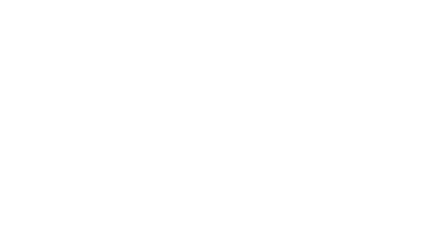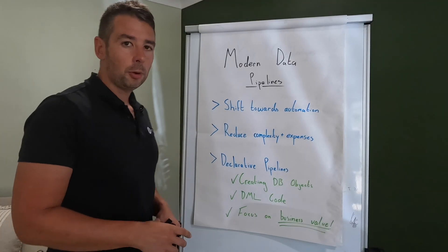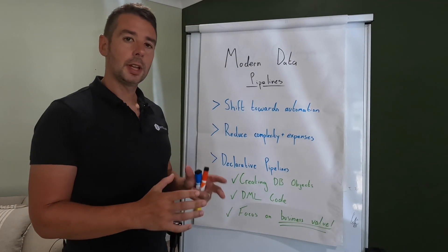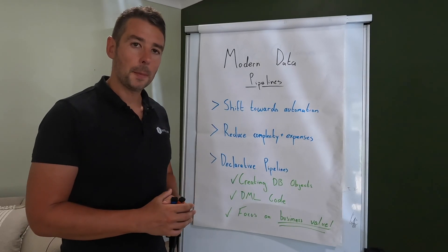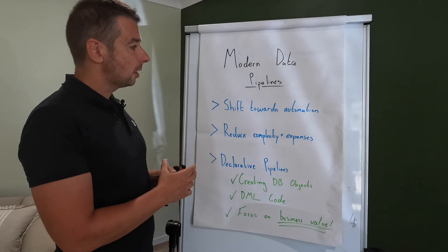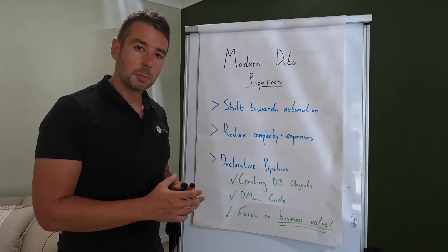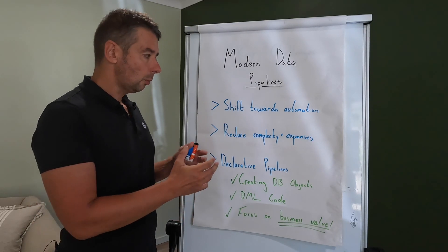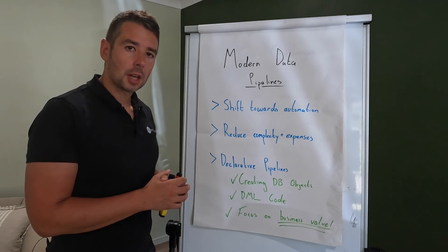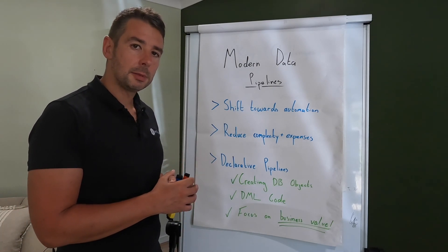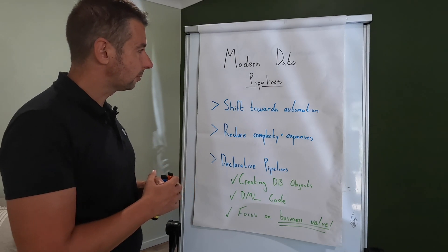Okay so before we get into the specifics around Snowflake and then look at DBT I just wanted to start off with a couple of pages as a bit of a revision or if you're new to building data pipelines what they are, how they've evolved, what they need to do and then move on to some of the challenges before looking at how Snowflake and DBT address these problems.